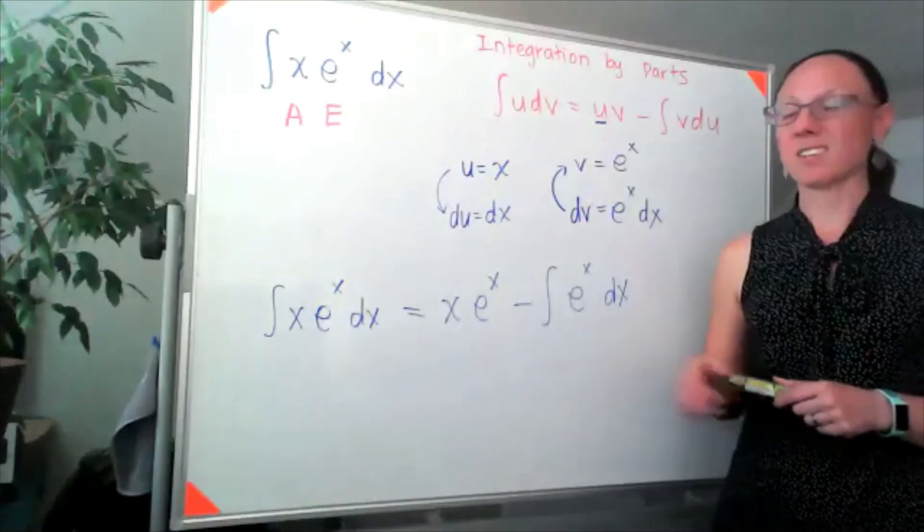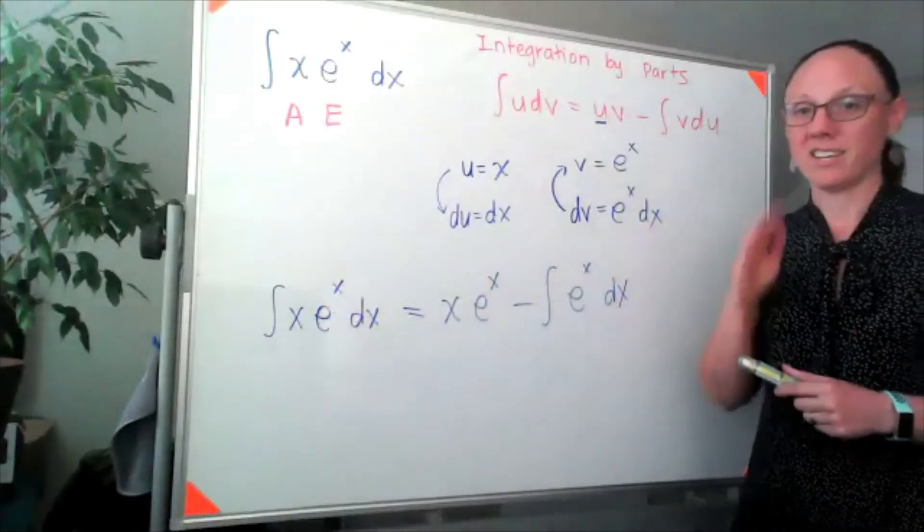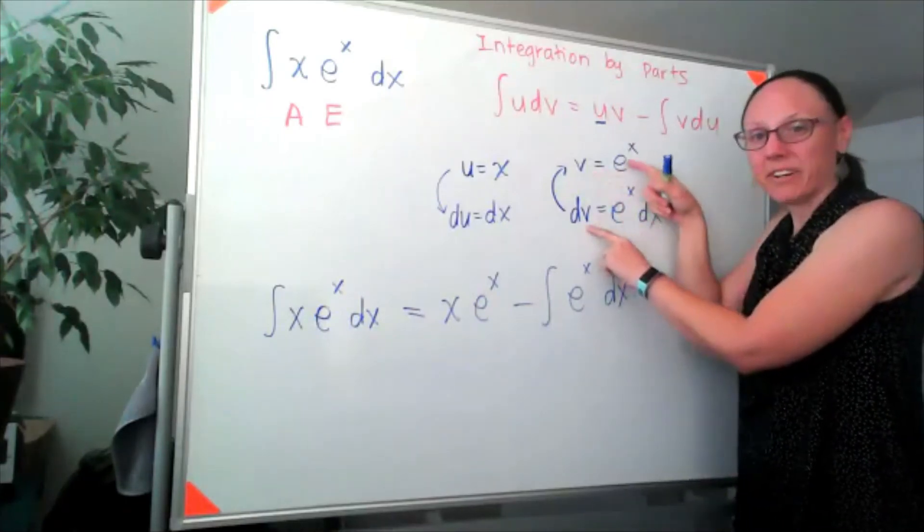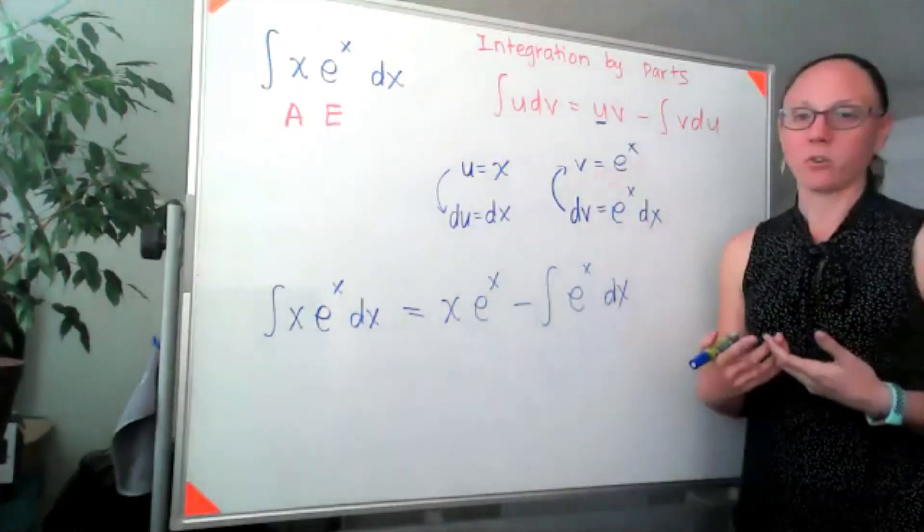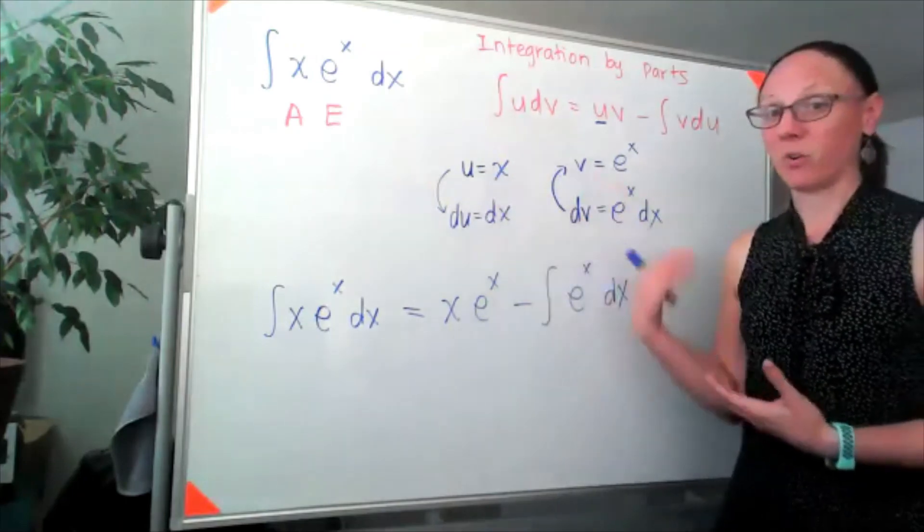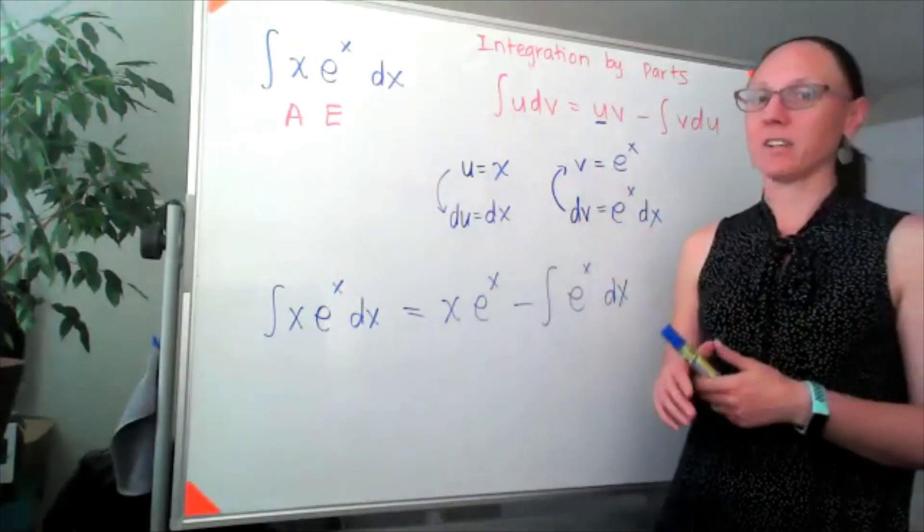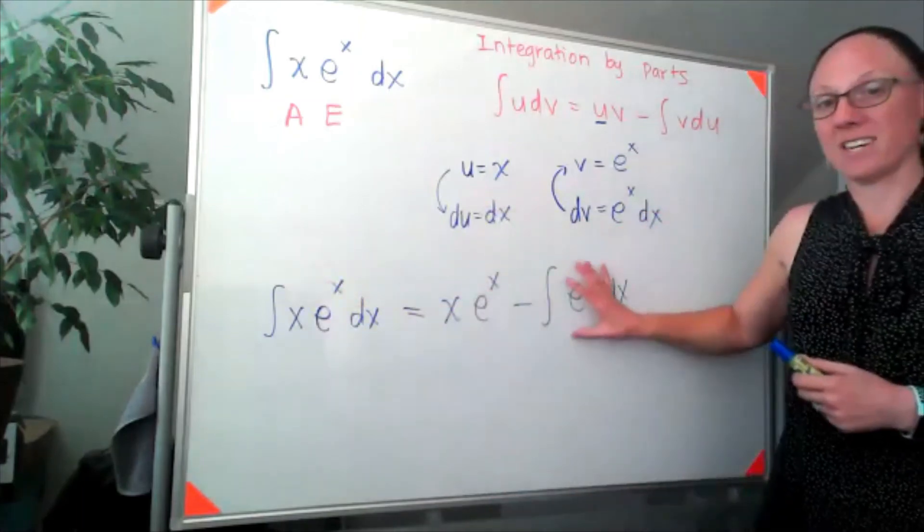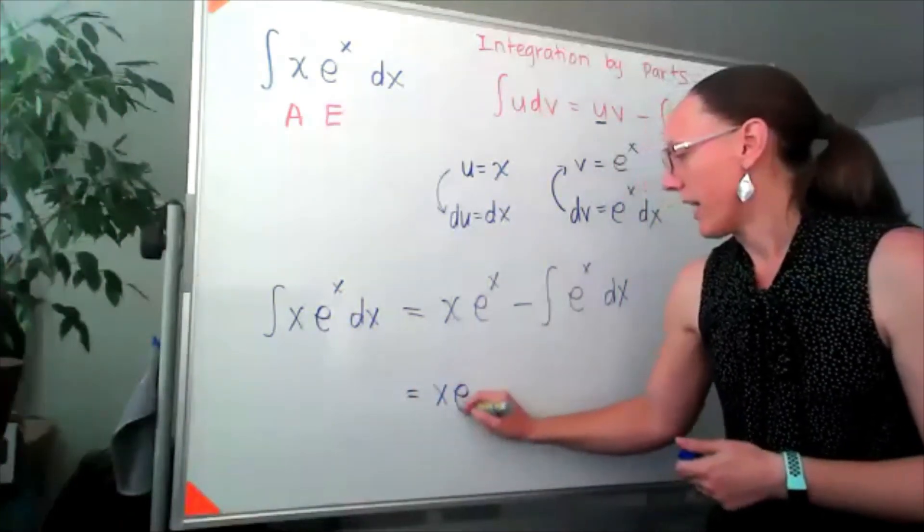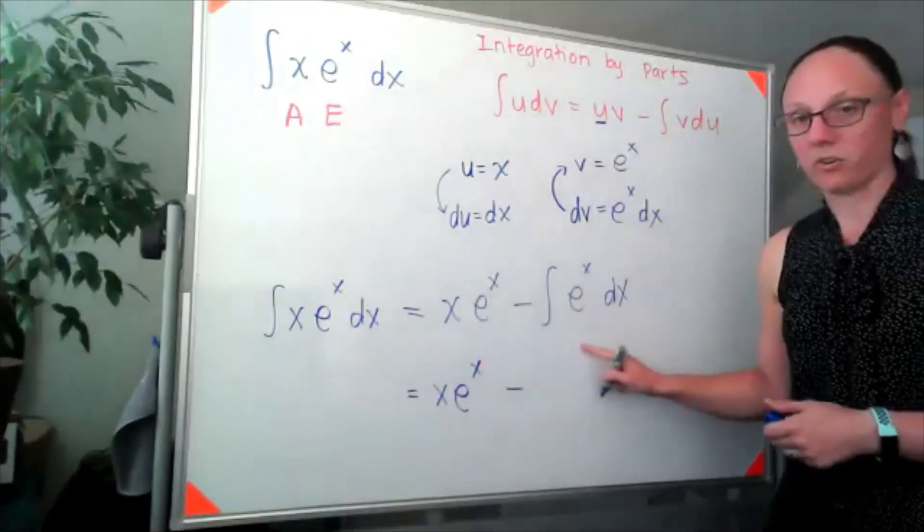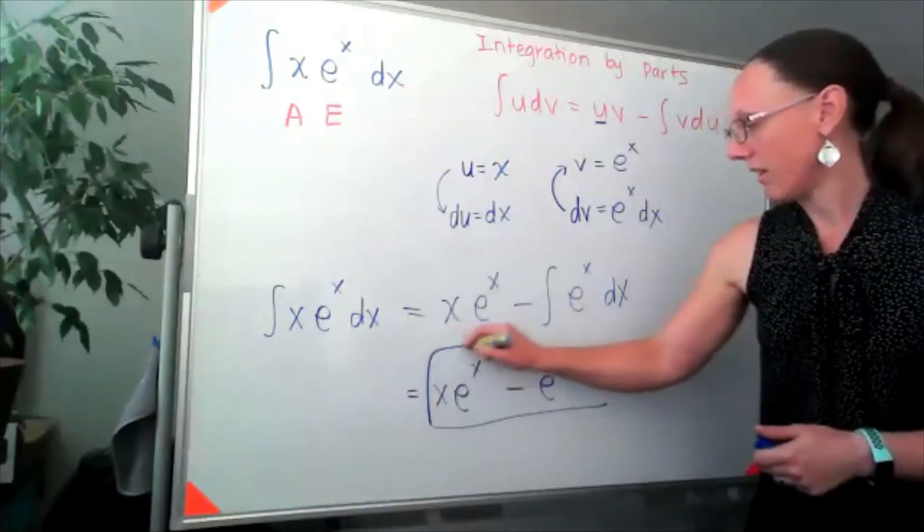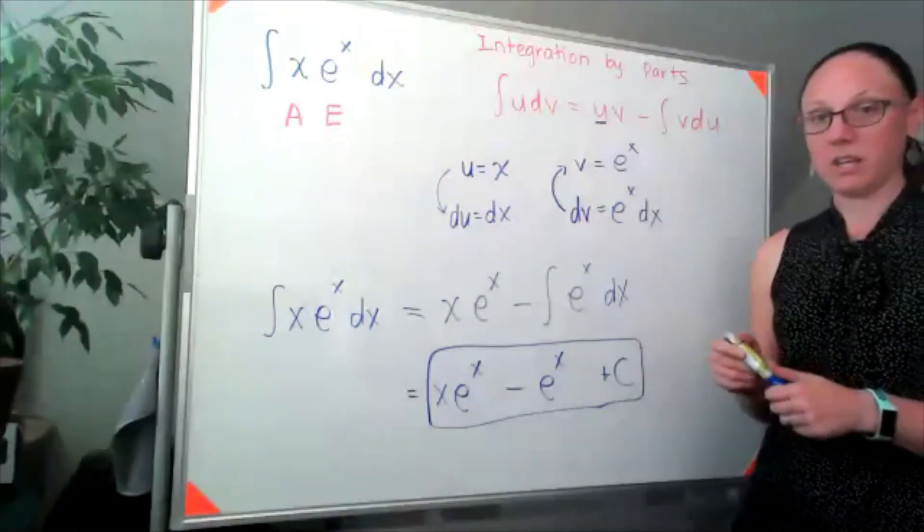When you do integration by parts, you're trading one integral for another one, secretly for two. Because to go from dv to v, I had to find an antiderivative. So every time you're doing integration by parts, it's not like a time saver, because we actually end up integrating more. But it hopefully takes something we don't know how to integrate and turns it into something that we do. And now I'm looking at xe^x minus, well, the integral of e^x is e^x plus a constant. And that is going to be my final answer.